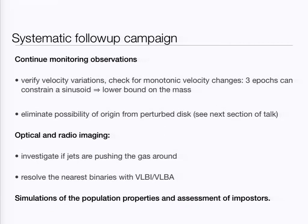In order to understand what this distribution is telling us, we need population synthesis models, which are now underway. Encouraged by these results, we are now pursuing a very systematic campaign to follow up the observations. We want to make more velocity measurements to verify the results so far and eliminate the possibility that we're looking at perturbed accretion disks. An important component of the follow-up program is optical and radio imaging. Radio imaging will give us the highest angular resolution we can hope for, and we really hope that with that we can resolve the nearest binaries.